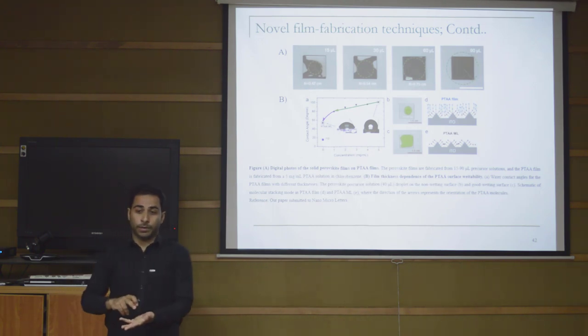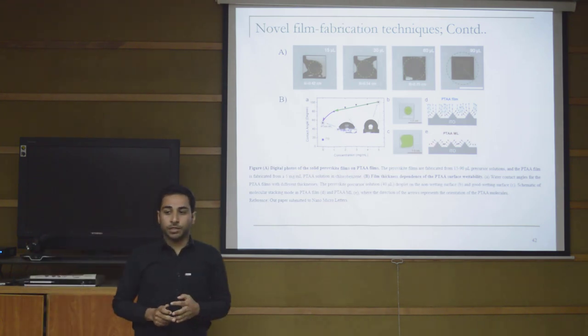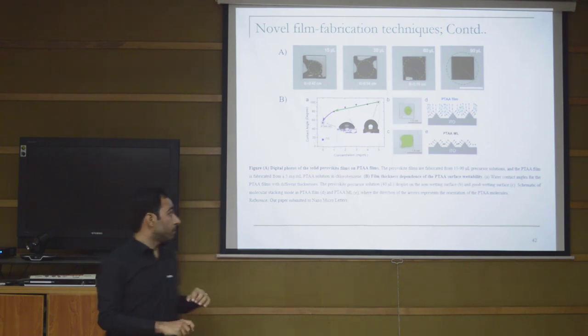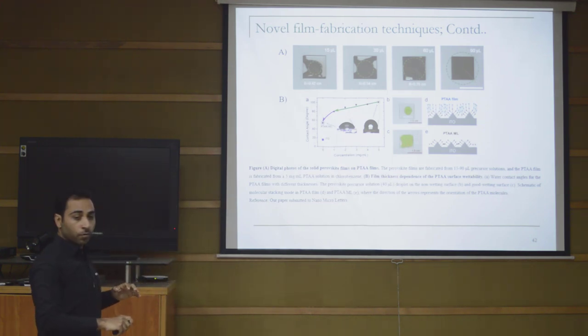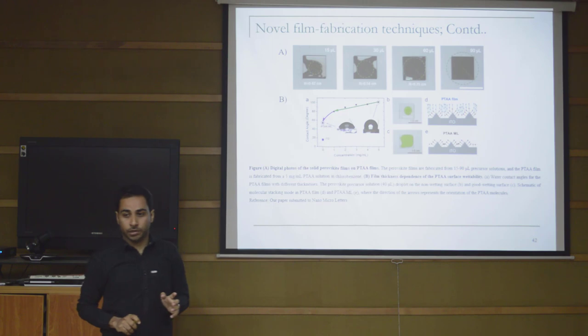What we did was decrease the thickness of the hole transporting layer almost to a monolayer. The roughness of the ITO was not changed—the roughness was almost the same—but there was still a hole transporting layer. Due to this roughness, the solution was very easily stickable on the surface. You can see on the thicker hole transporting layer the solution doesn't spread because of smoothness, but here the surface is rough and more hydrophilic so the solution spreads easily.